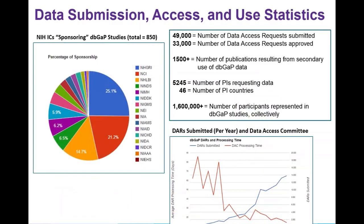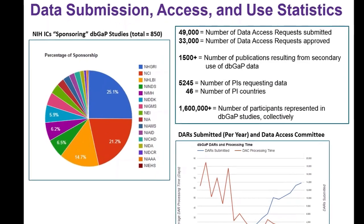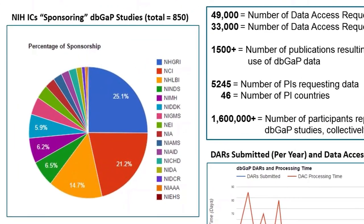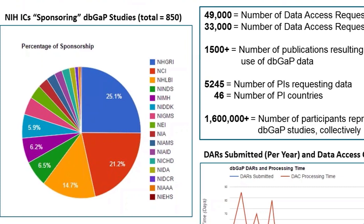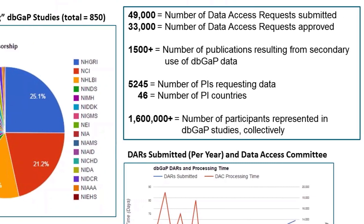These are some of the statistics. Right now, NIH institution centers are sponsoring about 850 studies in DbGAP, and the percentage of sponsorship is indicated on the left. NHGRI, NHLBI, and NCI have the most studies in DbGAP right now. For these 850 studies, there have been over 49,000 data access requests submitted, 33,000 of which have been approved. And over 1,500 publications have actually been produced as a result of accessing this data.